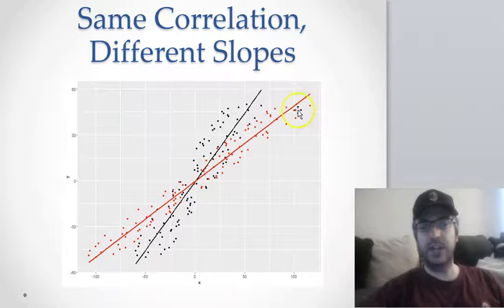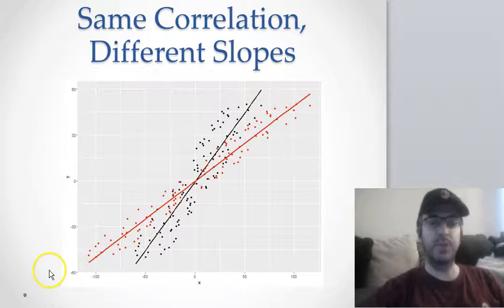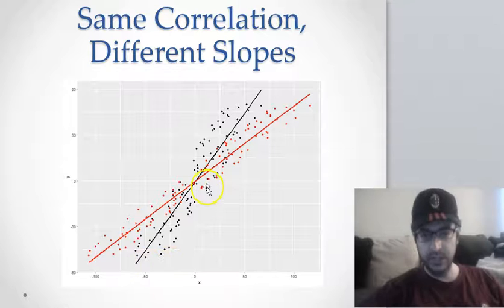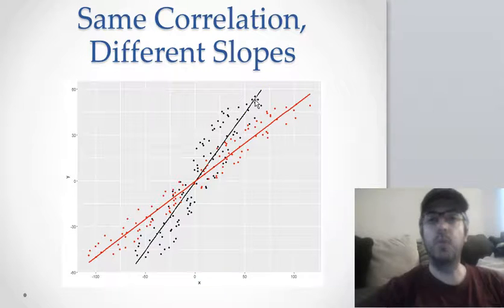So if you look here, this is the line we had before. It has a slope of 0.5. You do the same calculations here. Start at 0, 0. Go over to 50, and it's about 50 here. It has a slope of 1.